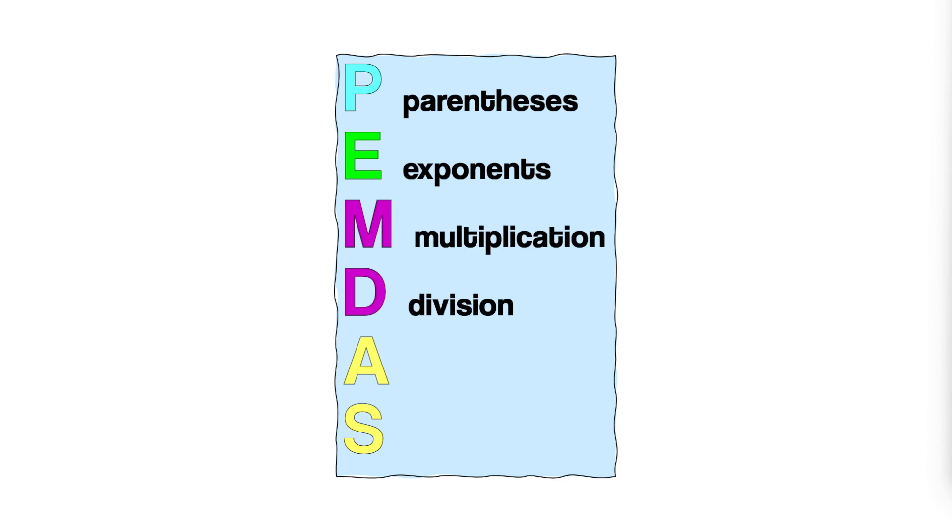M and D are multiplication and division. You perform them from left to right as they appear in the problem. Lastly, there is A for addition and S for subtraction.